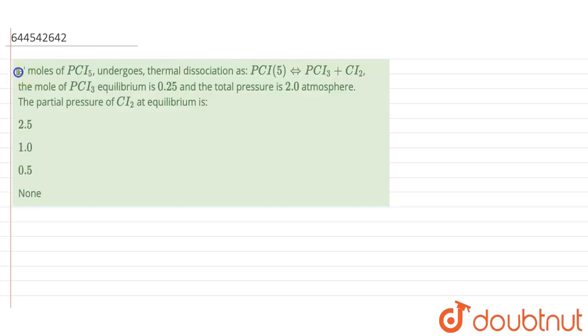So in this question, it is known that A moles of PCL5 undergoes thermal dissociation as PCL5 giving PCL3 plus CL2. The mole of PCL3 at equilibrium is 0.25 and total pressure is 2 atm. So the partial pressure of CL2 at equilibrium is.